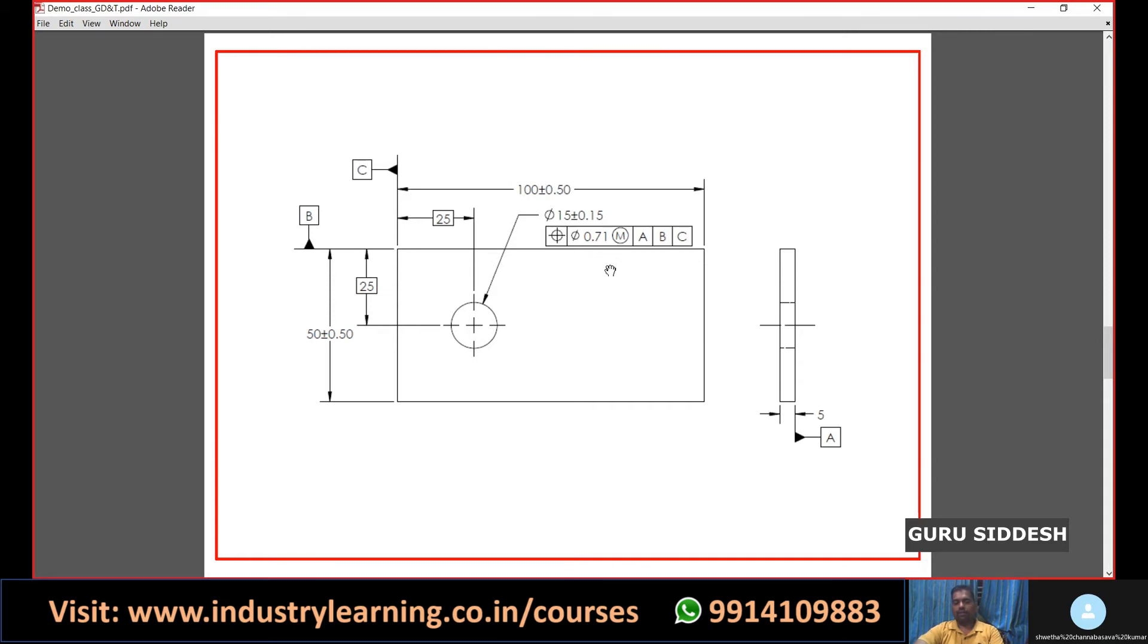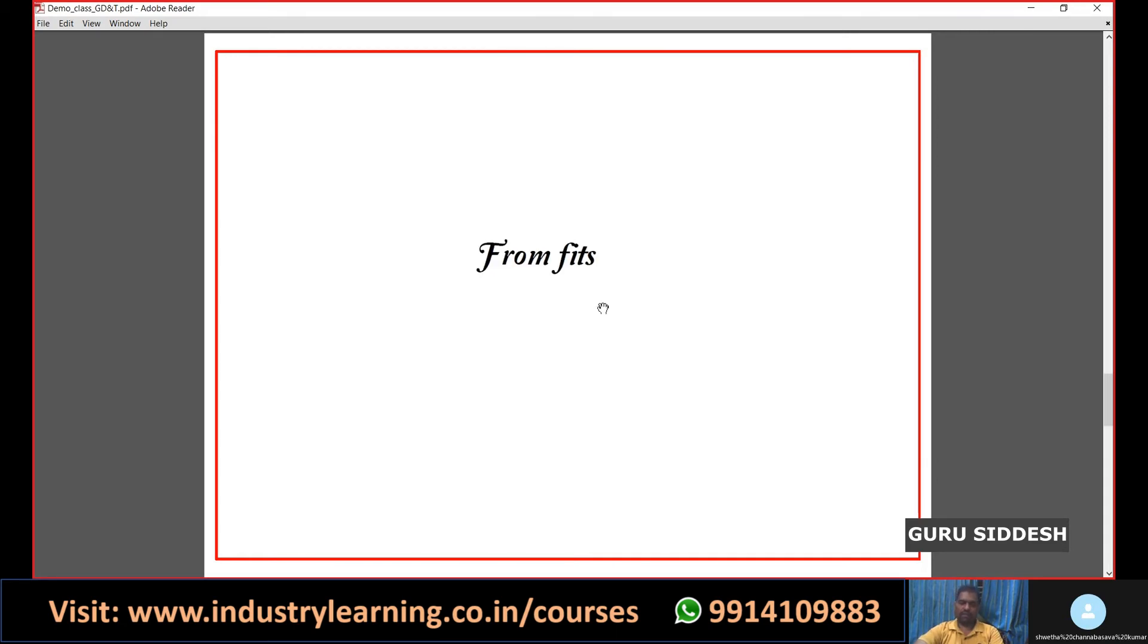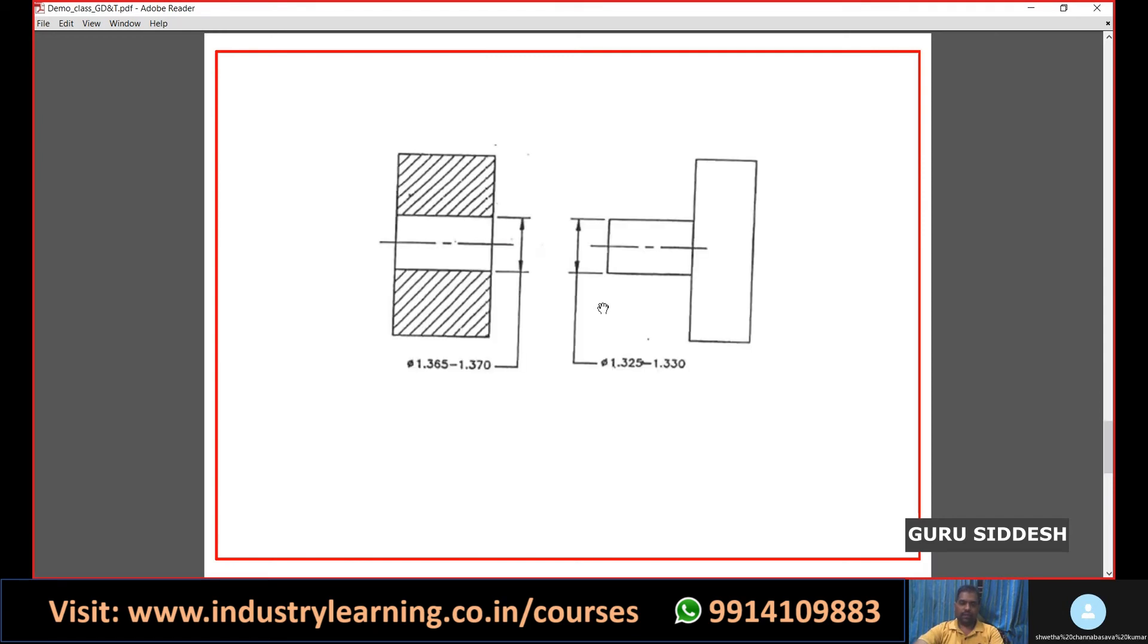The second method is from the fits. Where there is a fits requirement, we can find out the geometrical tolerance from there. If you see in the diagram, it encloses a pin and a hole. The pin dimension is 1.325 to 1.330. The hole dimension is 1.365 and 1.370. Now we have to find out the geometrical tolerance for these two.